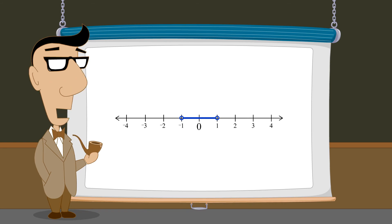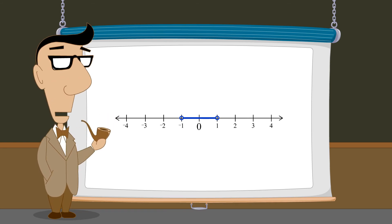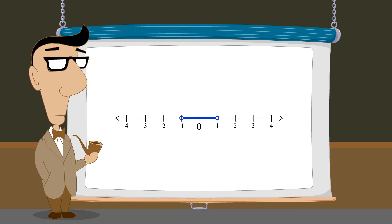However, regardless of whether an interval's endpoints are included or excluded, they still bound the interval to a finite length on the number line.